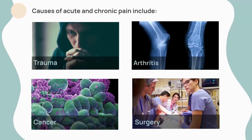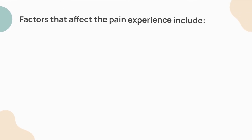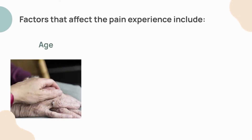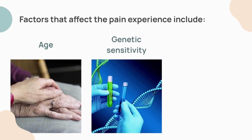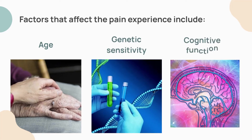Causes of acute and chronic pain include trauma, arthritis, cancer, tumor invasion, nerve compression, bone metastasis, associated infections, and immobility. Factors that affect the pain experience include age — for example, infants cannot verbalize or understand their pain, and older adult clients can have multiple pathologies. Genetic sensitivity can increase or decrease pain tolerance. Clients who are cognitively impaired might not be able to report pain or report it accurately.